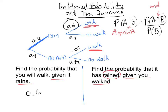The P just means probability. Let's translate this: the probability of rain given walked — where what's given is that you walked — is equal to the probability of rain and walk, all over the probability of walking in general.